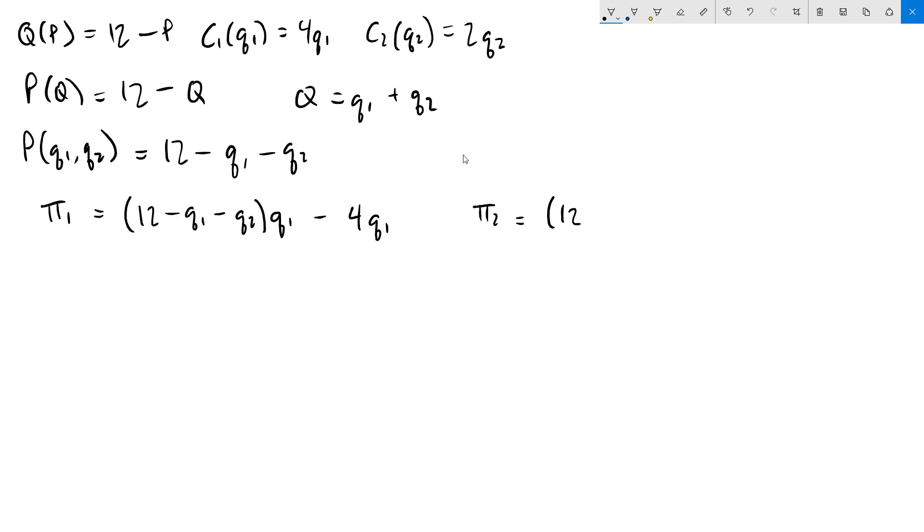Moving over to firm 2. Price times quantity again. This time remembering to write q2 for firm 2. And minus firm 2's total cost, 2q2. We'll multiply this whole thing out. 12 times q1, 12q1. And we have a minus 4q1 here, so those combine into 8q1. We've got minus q1 squared, and we've got minus q1q2.